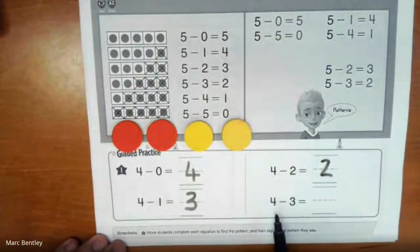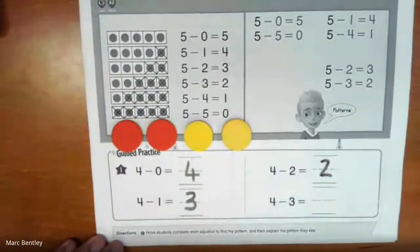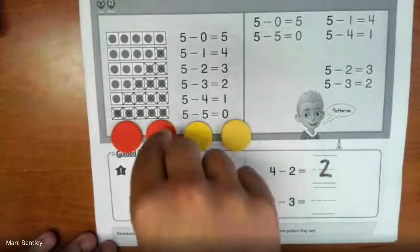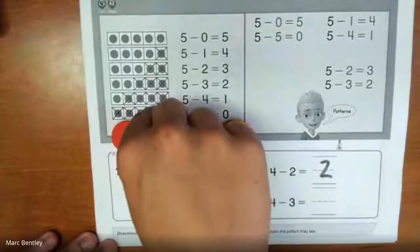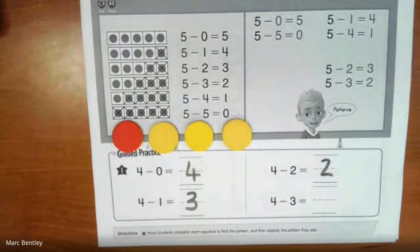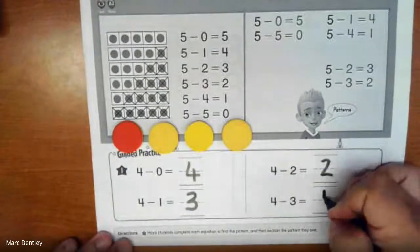Finally, down here we have 4 minus 3. So I had my original 4, but now I'm just going to flip one more counter. So how many red counters am I left with now? If you said 1, you're right. 4 minus 3 equals 1.